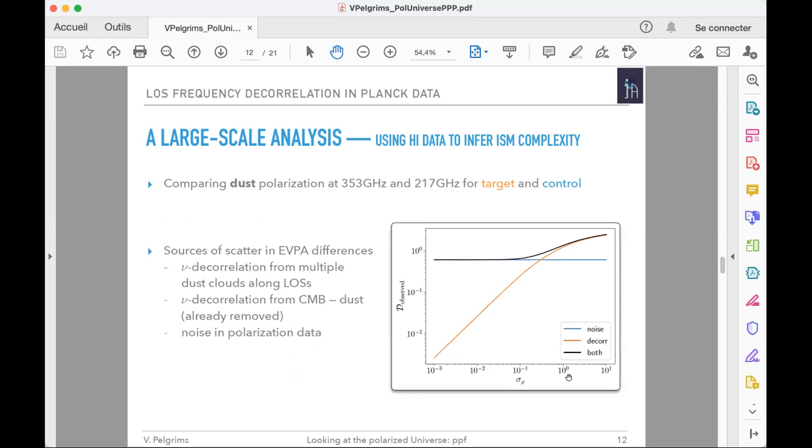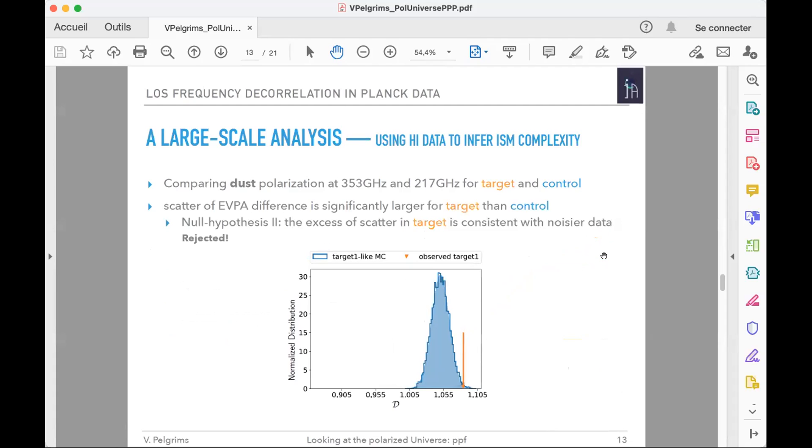Frequency decorrelation from dust clouds is not the only source of scatter in EVPA differences. There is also decorrelation from CMB and dust, but we've accounted for it by removing CMB estimates. The noise in polarization data might be different in target and control, and indeed it is different since the target sample is more depolarized than the control sample. The whole point was to find out whether the amplitude of SED variation is high enough to produce an excess in the scatter with respect to what noise produces.